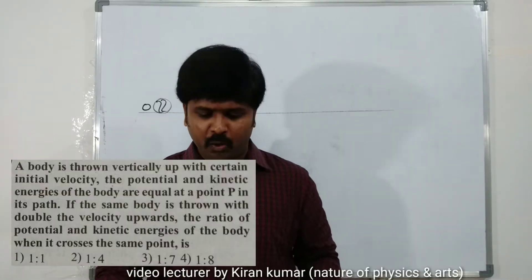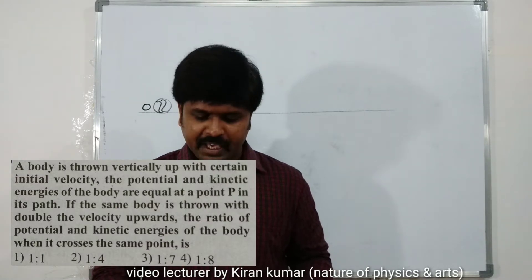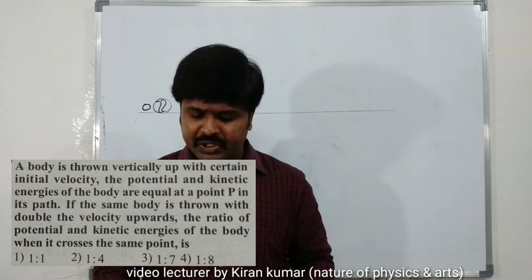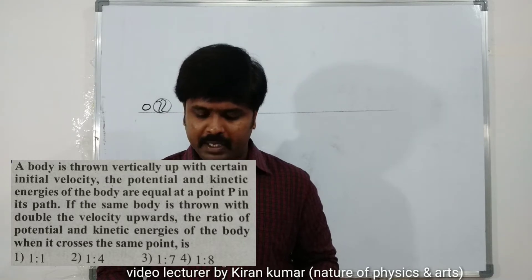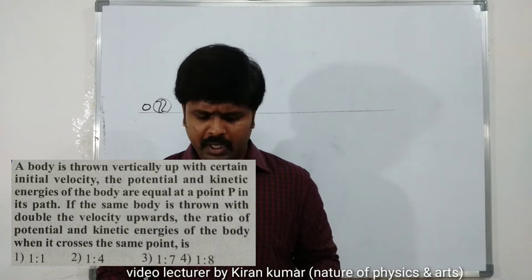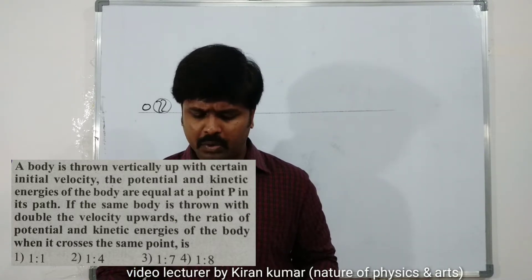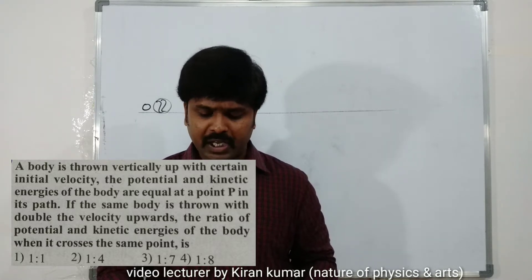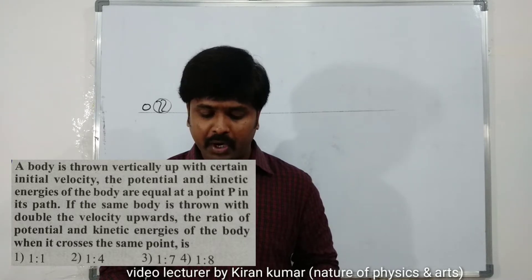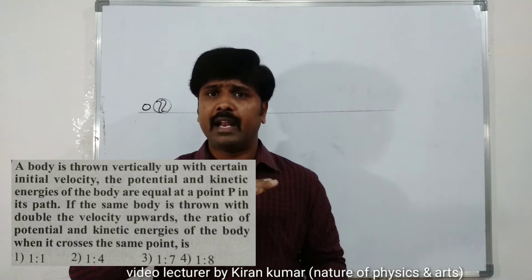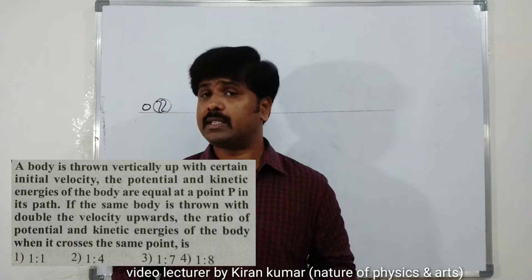Now a numerical: a body is thrown vertically up with a certain initial velocity. The potential energy and kinetic energy of the body are equal at a point P in its path. This is condition one. Condition two: if the same body is thrown with double the velocity upward, find the ratio of potential energy to kinetic energy when it crosses the same point P.